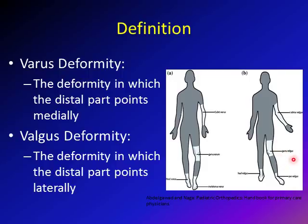This is a Genu Valgum — because the lower leg points away from the midline. What we're going to discuss in this lecture is Genu Varum deformity, which is the deformity in which the lower leg is pointing towards the midline. This is usually referred to as bow leg.